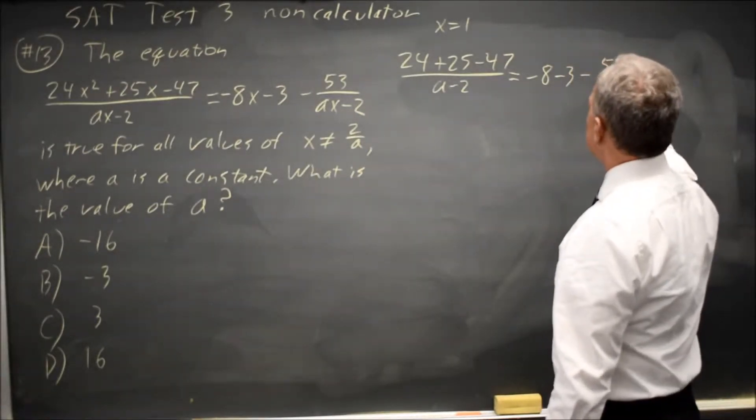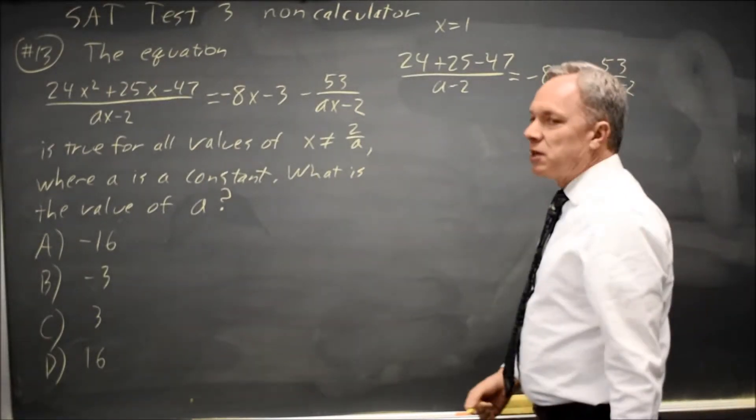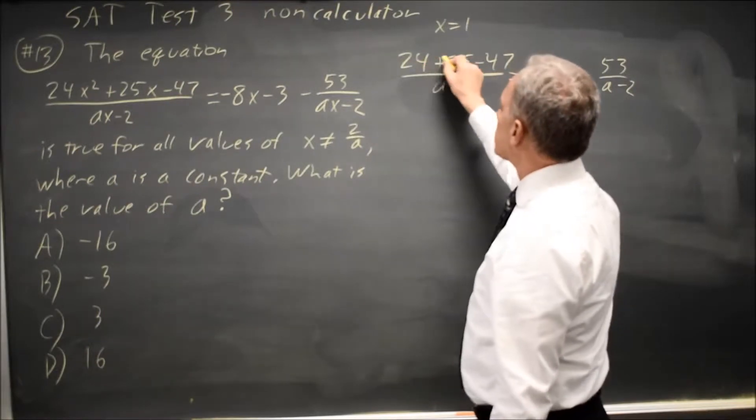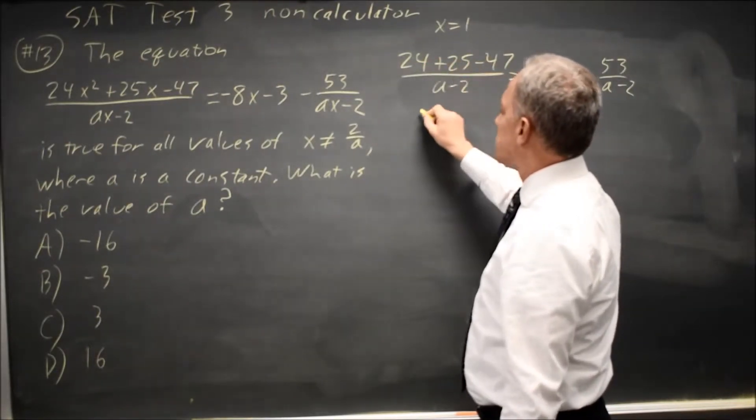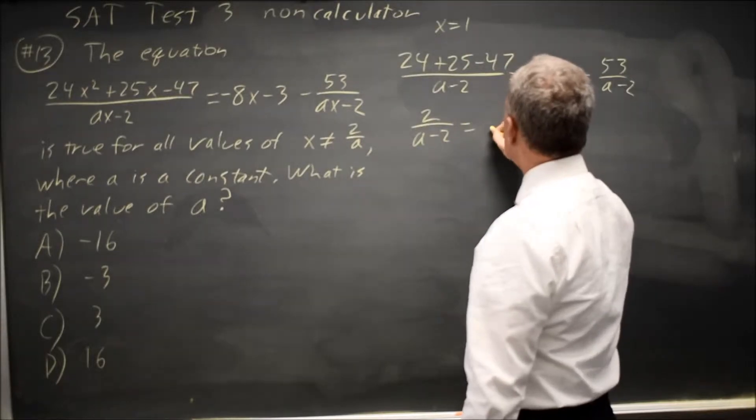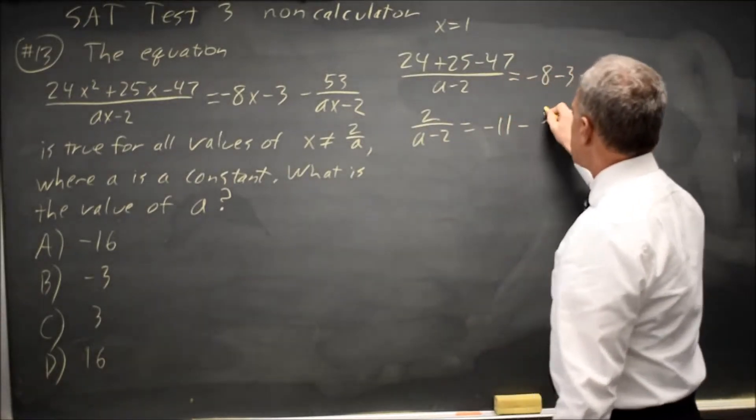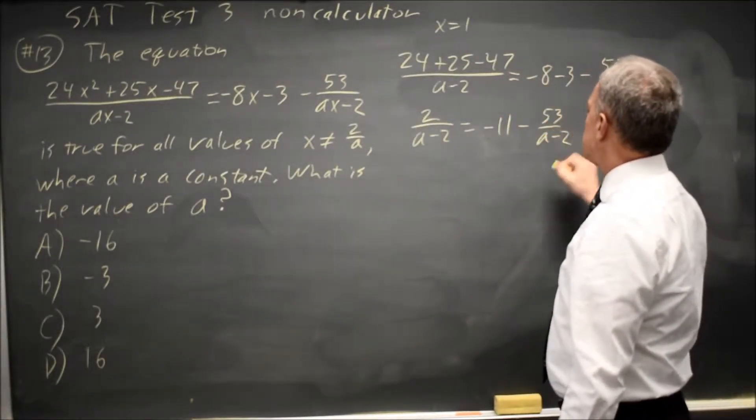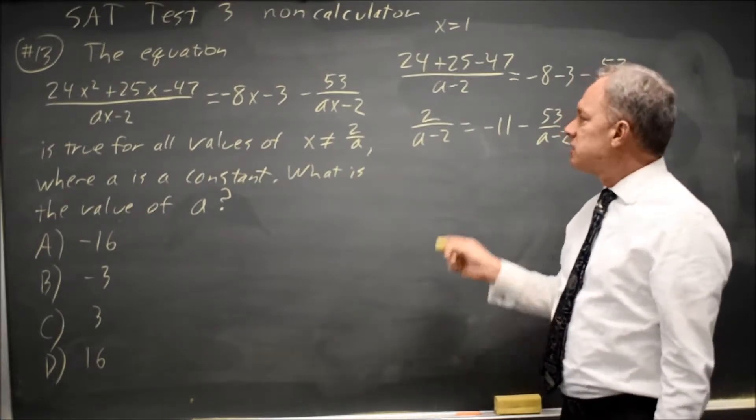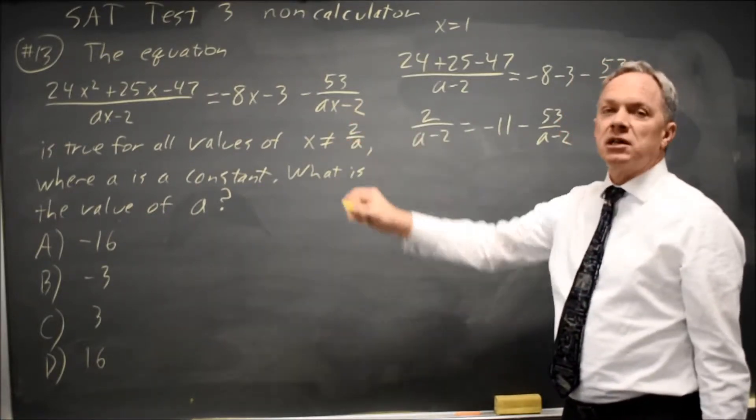minus 53 over A minus 2. This simplifies easily to 24 plus 25 is 49, minus 47 is 2, over A minus 2, equals negative 11 minus 53 over A minus 2. And I would suggest that this is much easier to work with than that was.